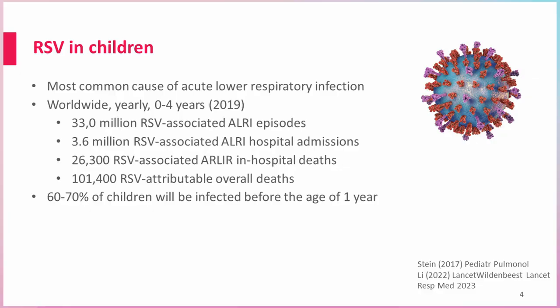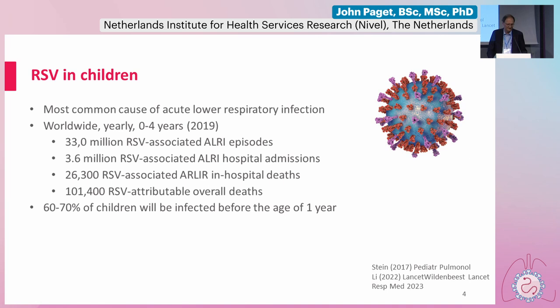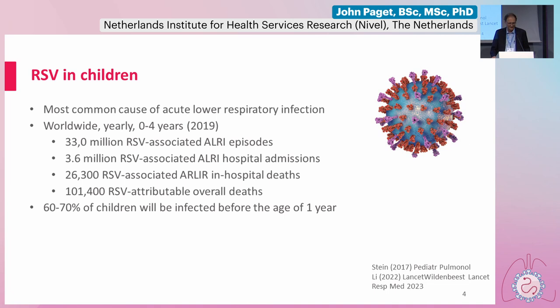Starting with the epidemiology of RSV, the first thing to be said is that the epidemiology of RSV is better defined in children than in adults, which is why you have to start with children. RSV is the most common cause of acute lower respiratory tract infections. Studies looking at the worldwide burden of RSV in children, most recently in 2019, found 33 million RSV-associated ALRI episodes, with various estimates for hospital admissions, hospital deaths, and overall deaths — RSV-attributable deaths at roughly 100,000 for the whole world. And 60 to 70 percent of children will be infected before the age of one.